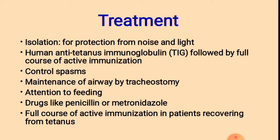Treatment: Isolation is the first strategy, meaning protection from noise and light. This is followed by human anti-tetanus immunoglobulin and a full course of active immunization. Control of spasms, maintenance of airway by tracheostomy methods, and attention to feeding are also important. Drugs like penicillin or metronidazole are effective for treatment. A full course of active immunization is given to patients recovering from tetanus.